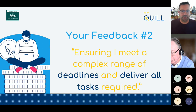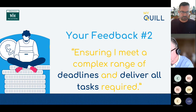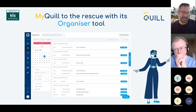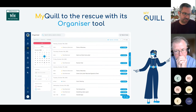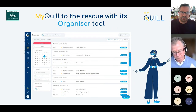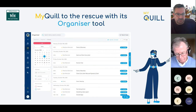Feedback point number two was around managing complex deadlines and delivering tasks required by key dates. With this in mind, we've recently released our Organiser. This has been developed by our team with many years of experience working in and understanding case stages. The Organiser is made up of key aspects such as key dates, milestones, task lists, and timeline views, so you can see a case from start to finish. You can assign tasks to different users and track who's been assigned what. There's also a supervisor watch function to ensure nothing is missed.